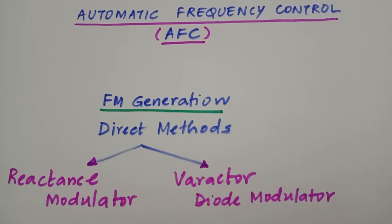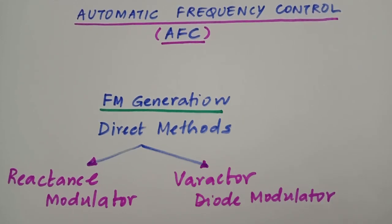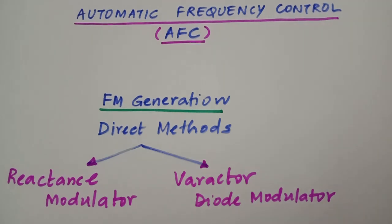That instability is the limitation of the reactance modulator, and this is where automatic frequency control systems are required. The reactance modulator has the advantage of good frequency deviation, so we can exploit that advantage, but the disadvantage must be controlled. This is where the automatic frequency control system comes into picture.